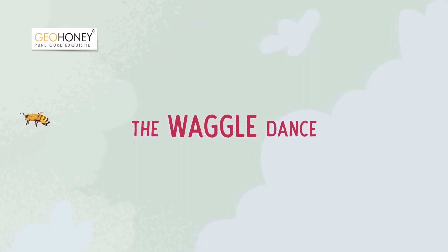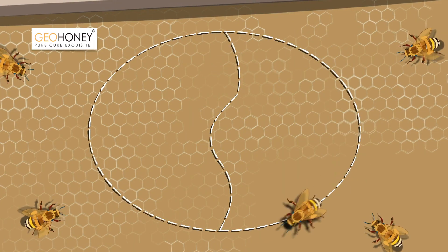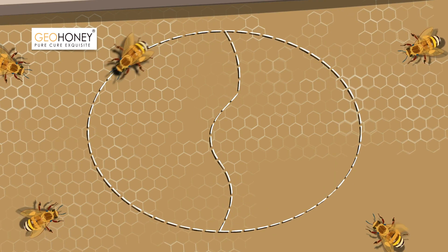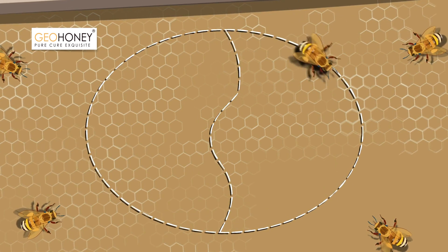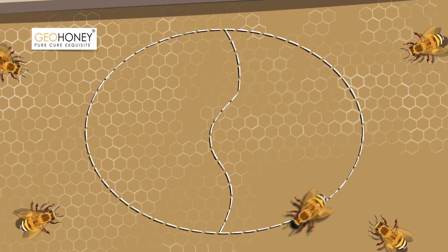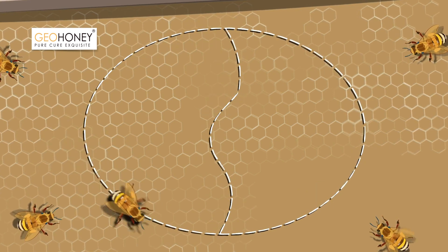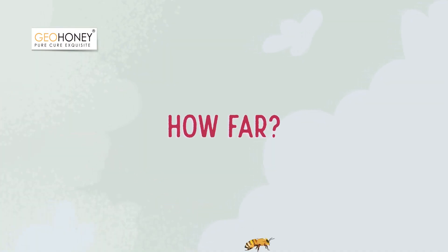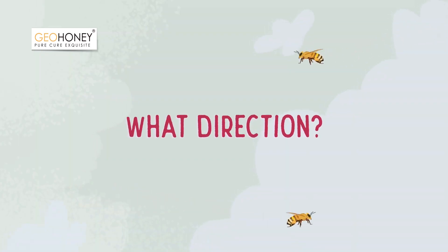The Waggle Dance is a special figure-of-8 dance that is done by the honey bee in its hive. One bee dances while other bees stare at it to learn the directions to a specific flower patch. The longer the dance, the farther the flowers are.